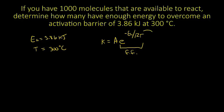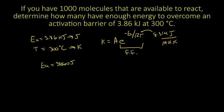One important thing to note is that R is the gas constant: 8.314, with units of joules per mole Kelvin. So we want to make sure that our activation energy gets converted to joules and our temperature gets converted to Kelvin. Here our activation energy is 3,860 joules and our temperature in Kelvin is 573.15 K.